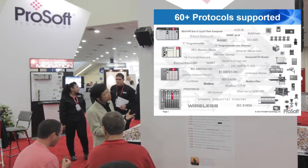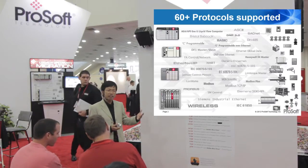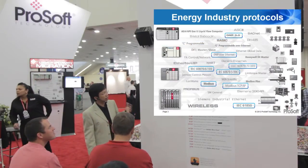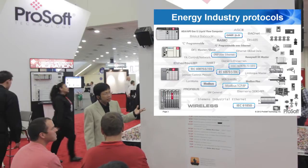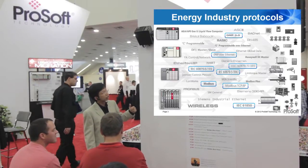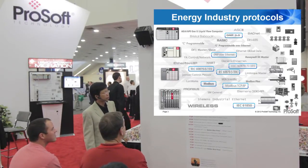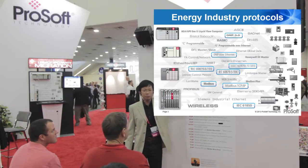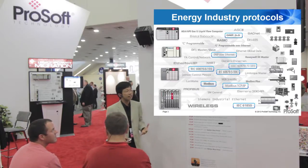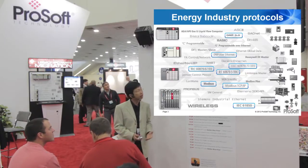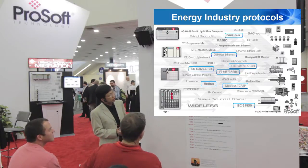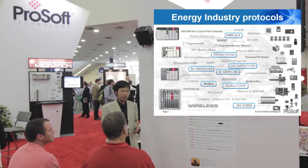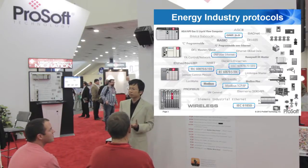Historically, some of these networks have been popular in specific industries. For the power and energy industries, we've found that DNP3 has been really, really popular. A bunch of IEC protocols are really popular as well, and lately we've started to see the emergence of a new protocol called IEC 61850.